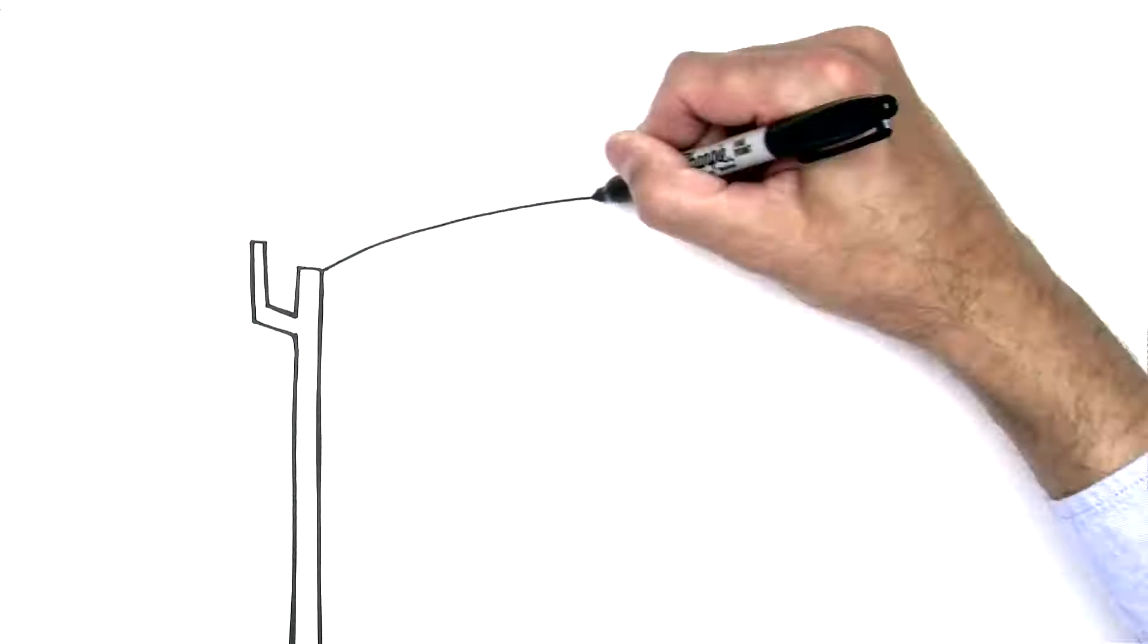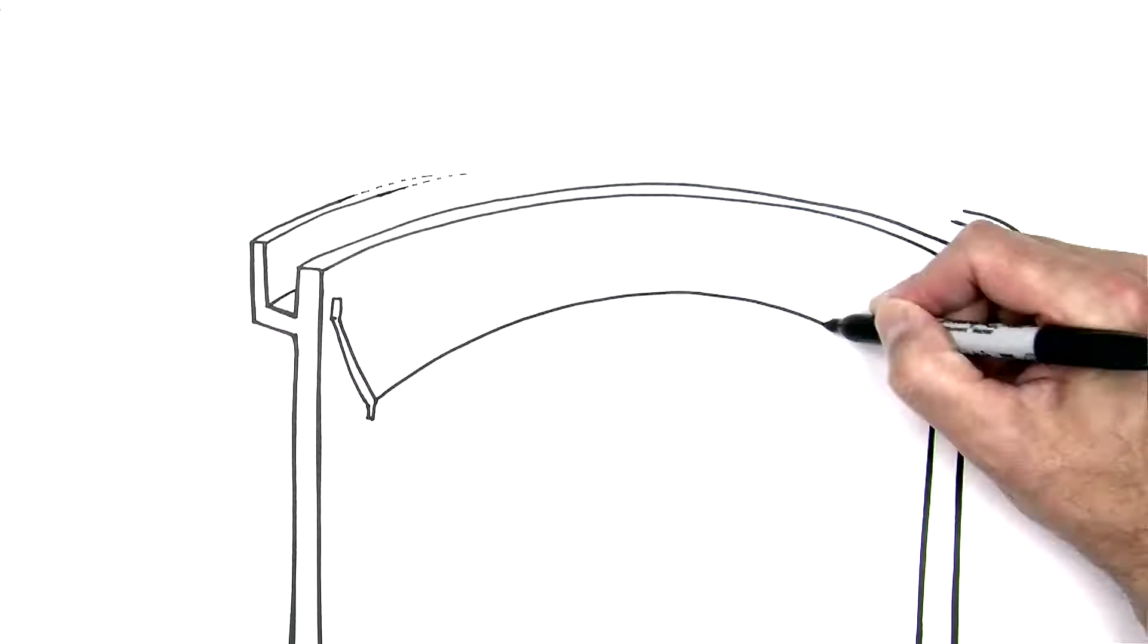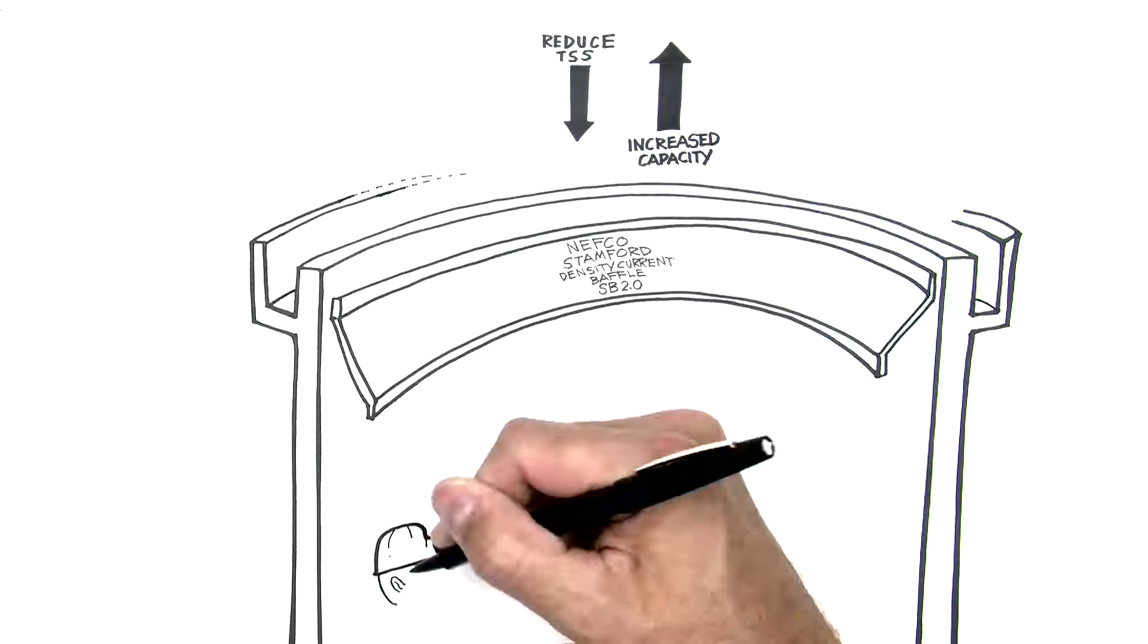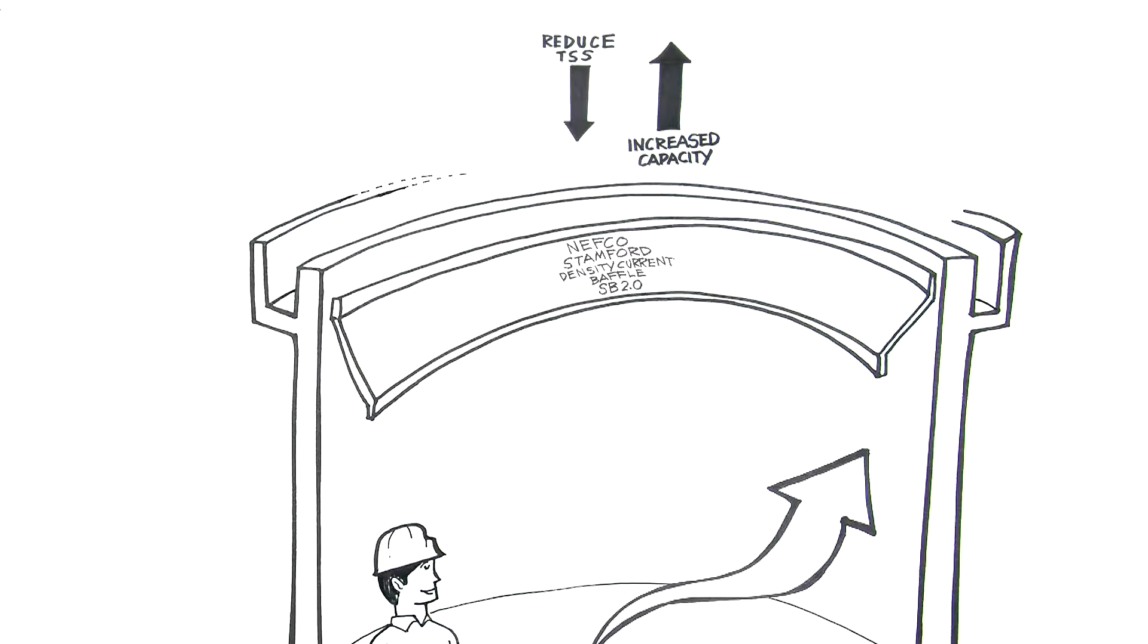Density current baffles intercept these currents and redirect them toward the main clarification volume of your tank. This reduces your effluent solids and increases your hydraulic capacity. The baffle is passive, so it does all this without using any energy.